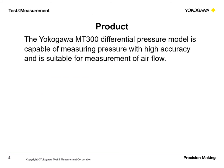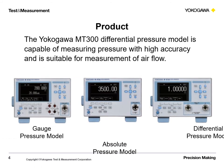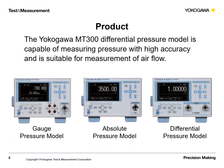The Yokogawa MT300 differential pressure model is capable of measuring pressure with high accuracy and is suitable for measurement of air flow.